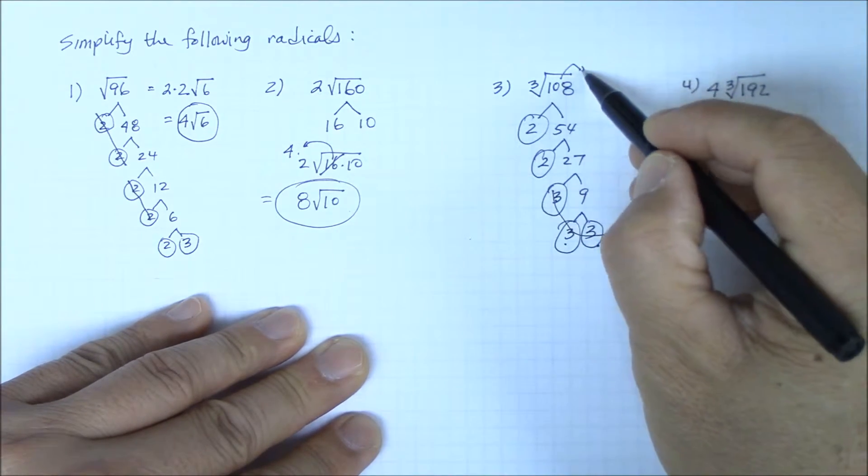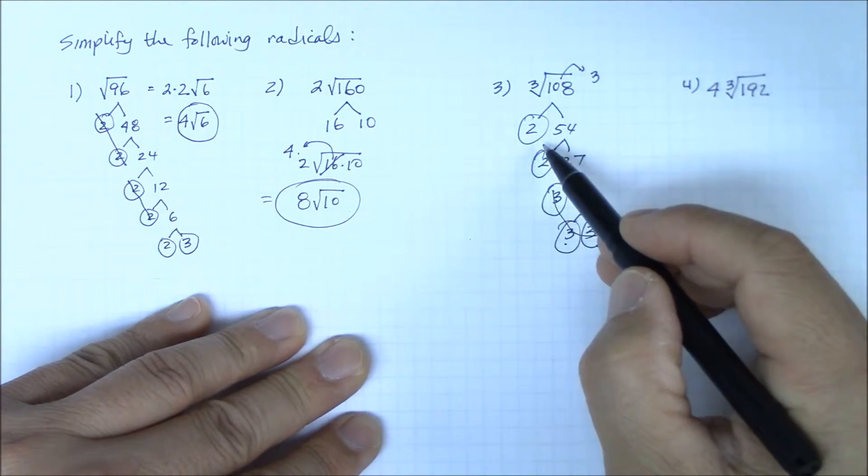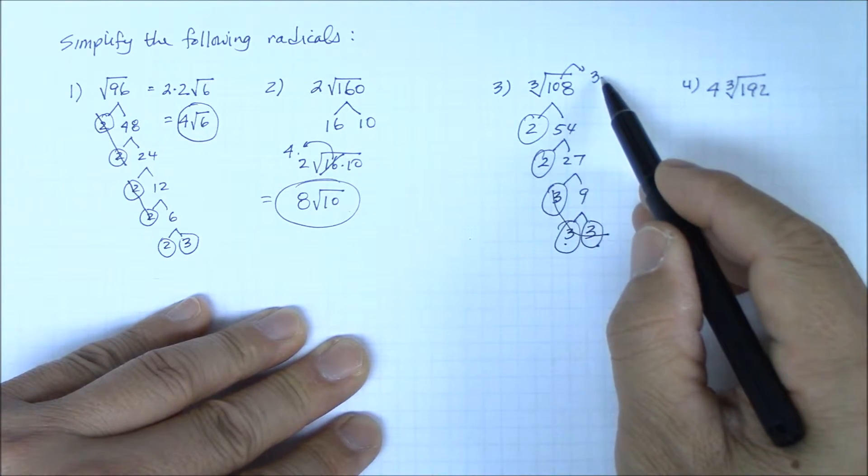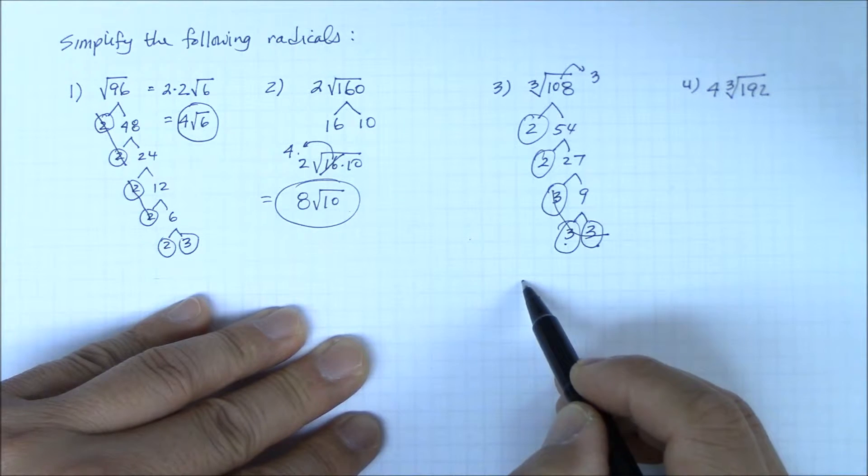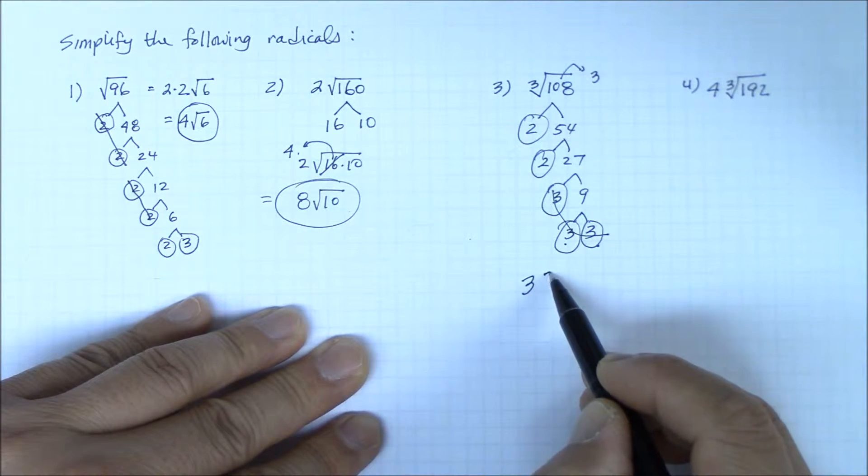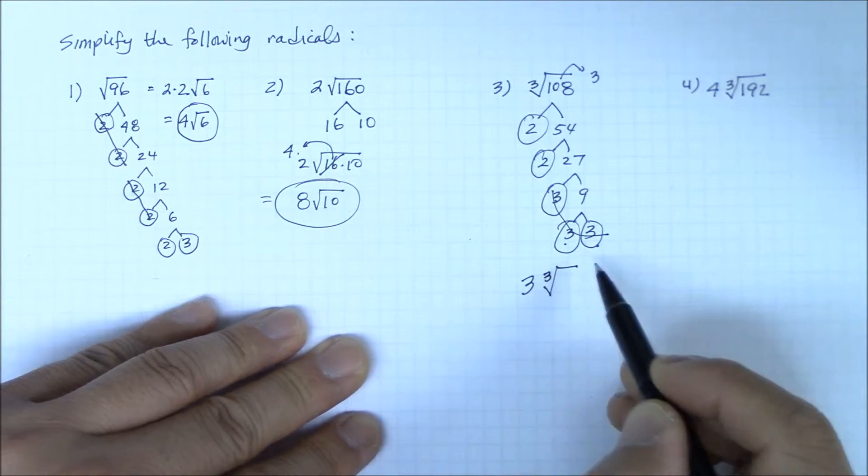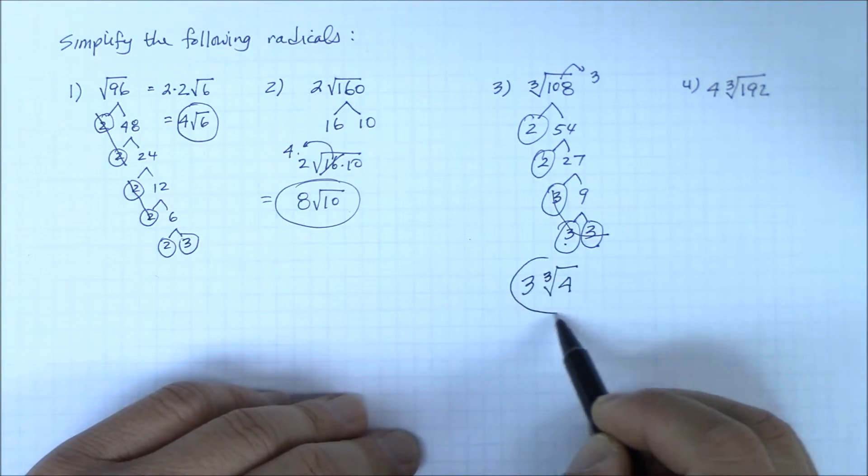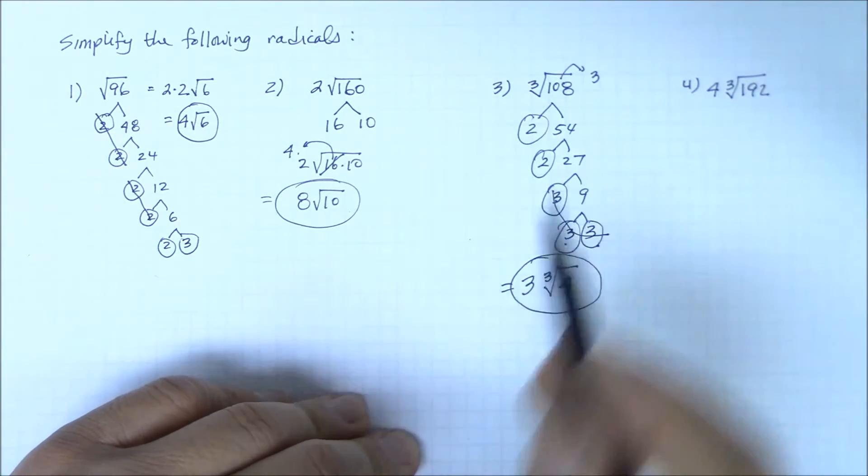Three comes out. Do we have a set of three 2s? No, so they don't come out. The final answer: 3 comes out, and what remains inside the radical is the cube root of 2 times 2, which is 4. That's the simplified answer for number 3.